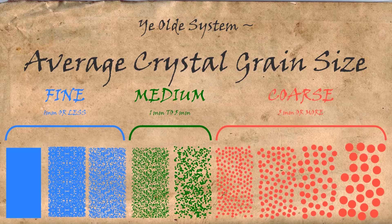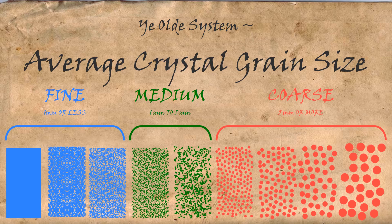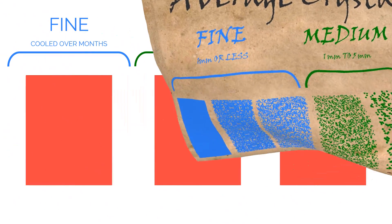These groups are less than 1mm, 1–5mm, and more than 5mm respectively. Of course, if you can't see the individual grains, it's classed as fine. Crystal grain size is often the first thing used to identify a rock — it's quick and can be very accurate. Comparing the rock to a series of diagrams makes this even easier.